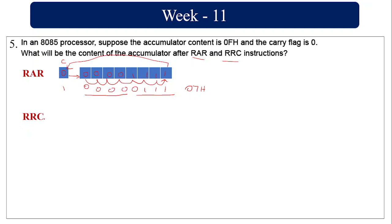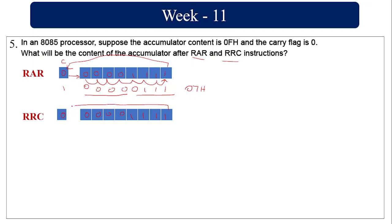Now let's see RRC. RRC is Rotate Right Circular — you rotate the accumulator content to the right. The LSB value is copied to carry and also becomes the new MSB — the carry is not involved in the shift. So the LSB (which is 1) comes to the MSB position. The shift gives 1000 0111, where 1000 is 8 and 0111 is 7, so the RRC value is 87h.